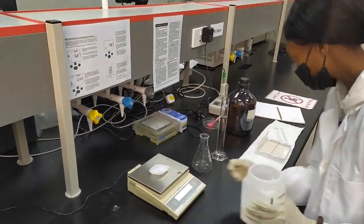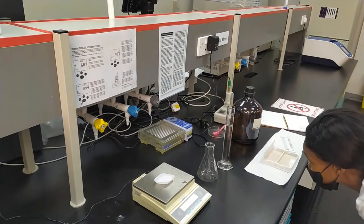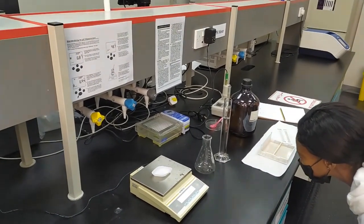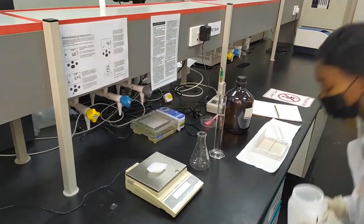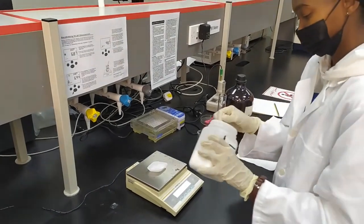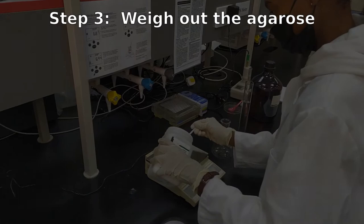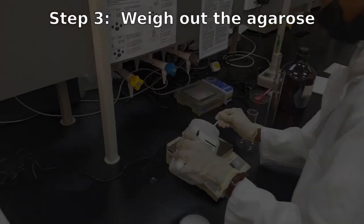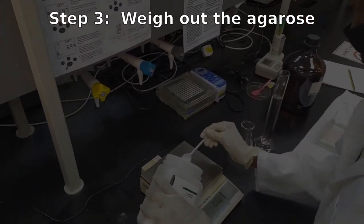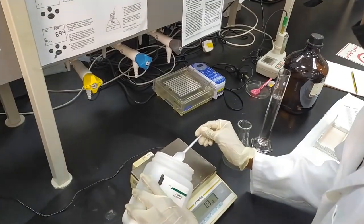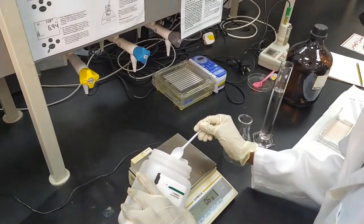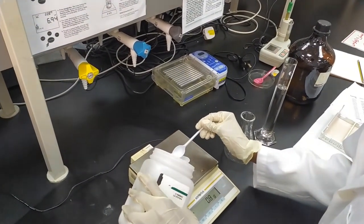And then, you're going to weigh out your reagent. And in our case, it's just 1 gram. So, it's very simple. You don't have to be absolutely precise with these. It doesn't matter if the DNA is running through a gel that is 1.0% or 1.05%. Your DNA is still going to run through it.